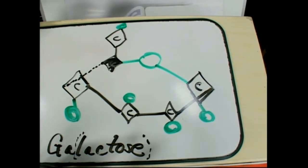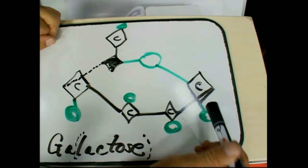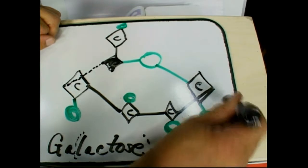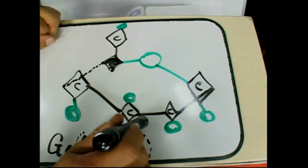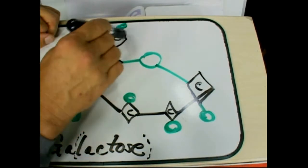So now we go through — do all the carbons have O's on them? That one, that one, that one, that one — this gets that, that gets that.